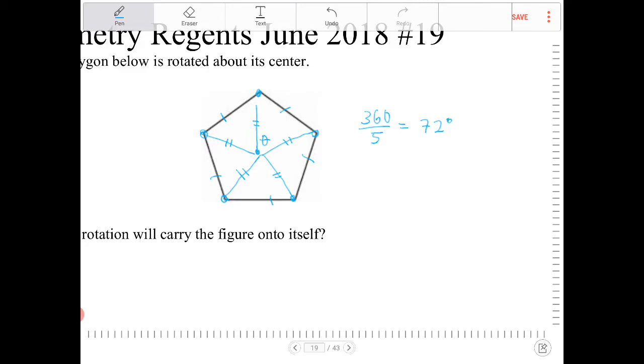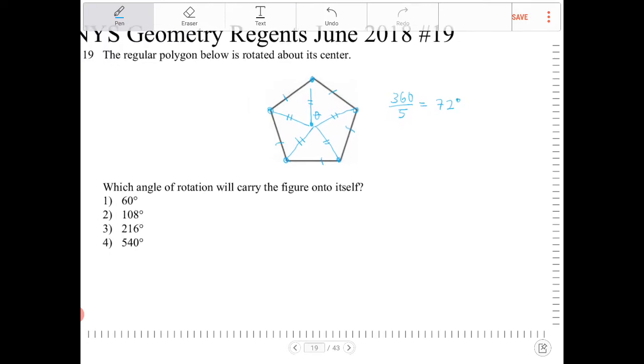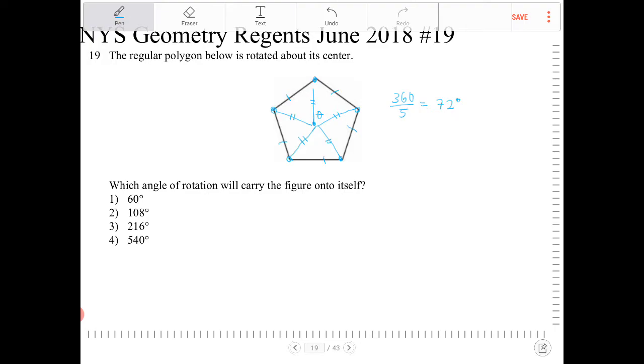So the rotational symmetry, or this pentagon, will land back on itself any time the pentagon is rotated with multiples of 72.